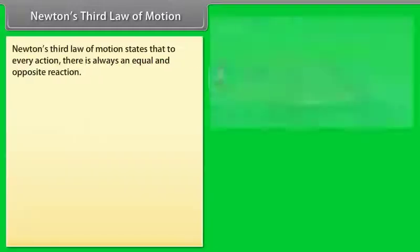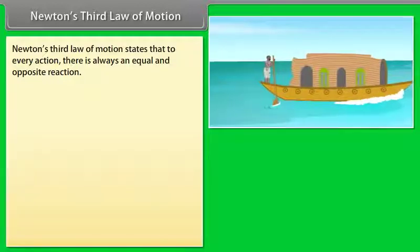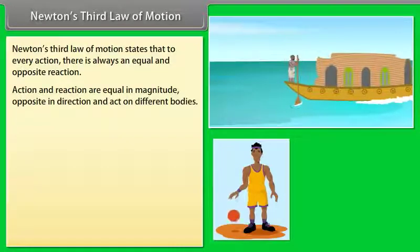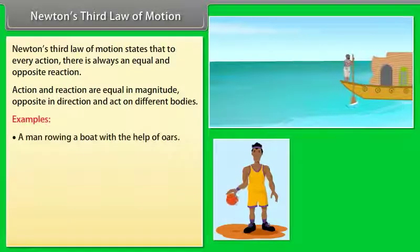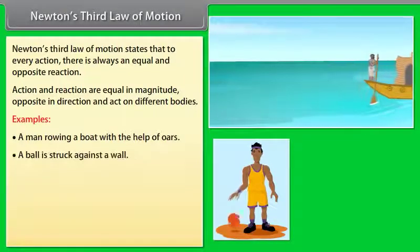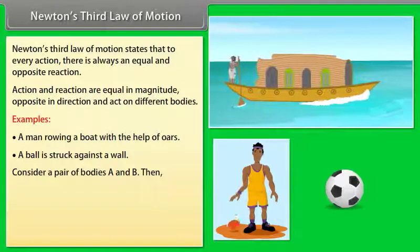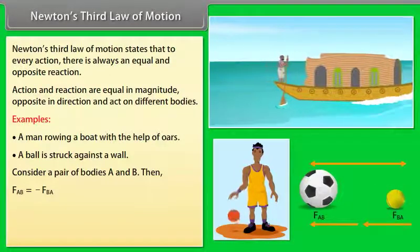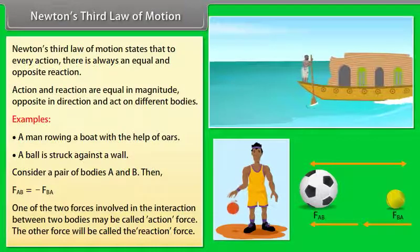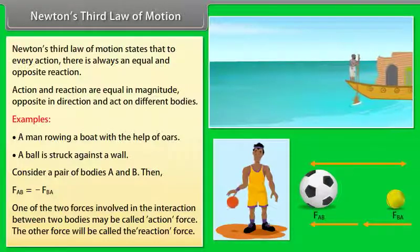Newton's third law of motion states that to every action there is always an equal and opposite reaction. Action and reaction are equal in magnitude, opposite in direction, and act on different bodies. Examples include a man rowing a boat with oars and a ball bouncing on the ground. For a pair of bodies A and B, FAB = −FBA. One force is called the action force and the other the reaction force.